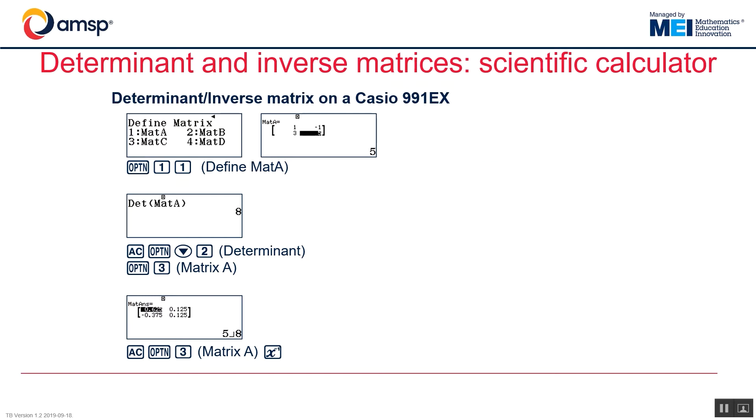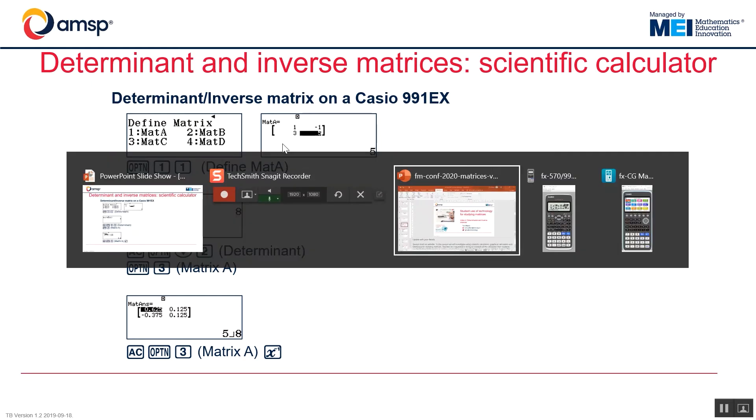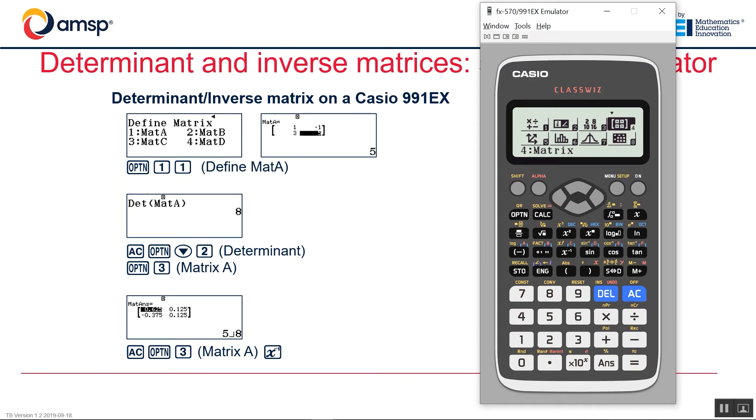In the first example I want to look at how you find determinants and inverse matrix on a scientific calculator. I'm going to use a Casio 991EX ClassWiz. So here's the 991EX ClassWiz. First thing I'm going to do is go into matrix mode which you'll see is mode 4.